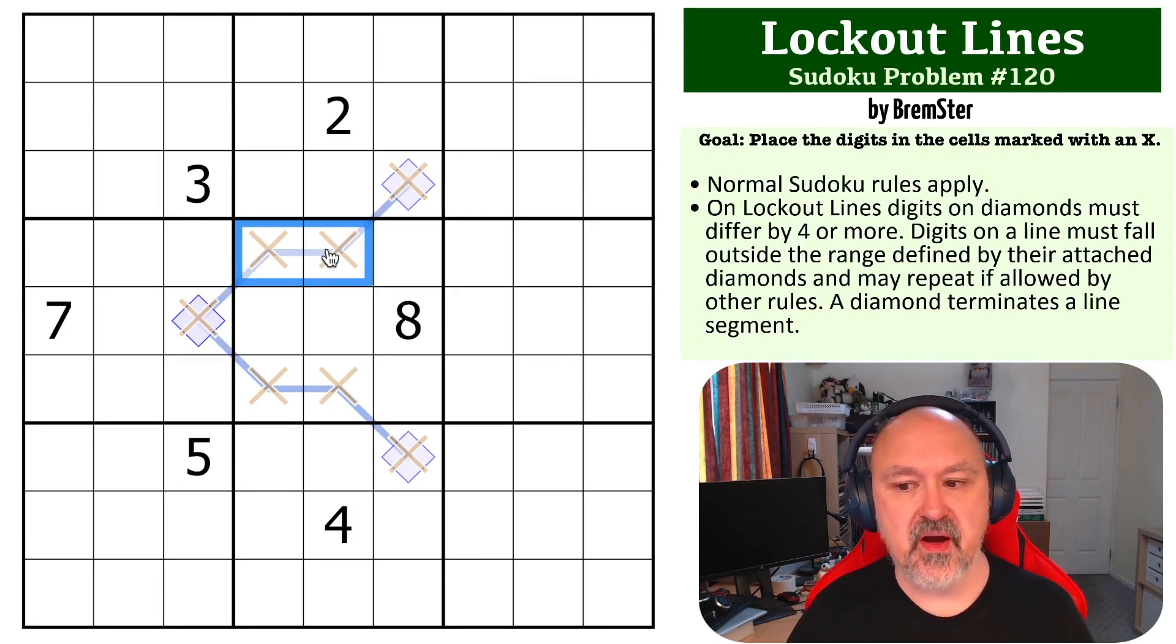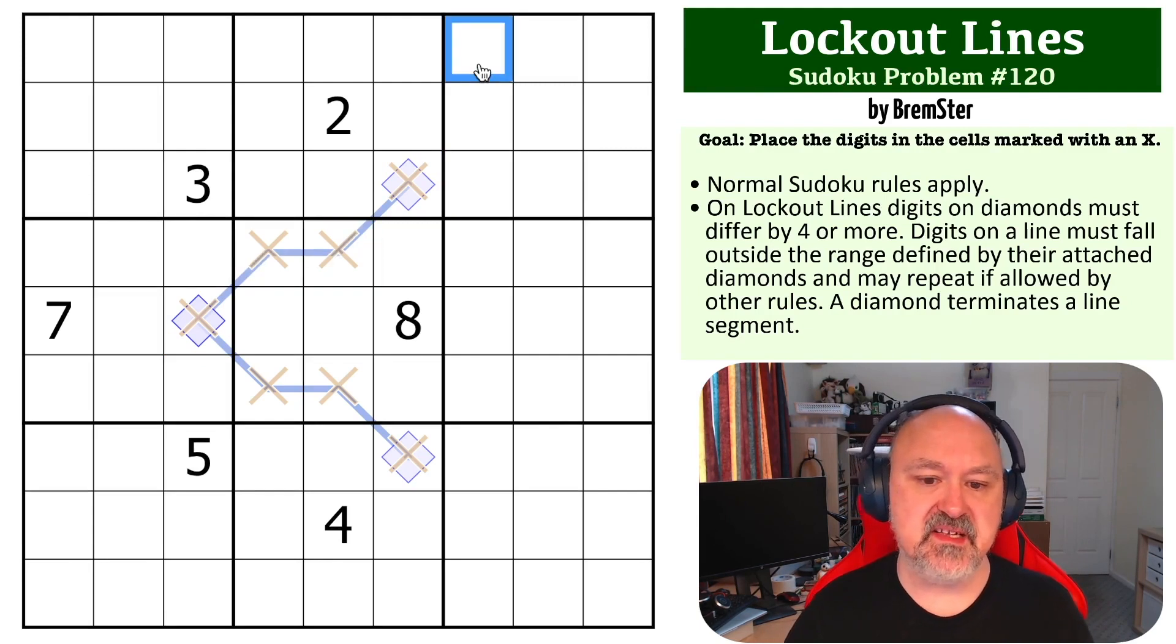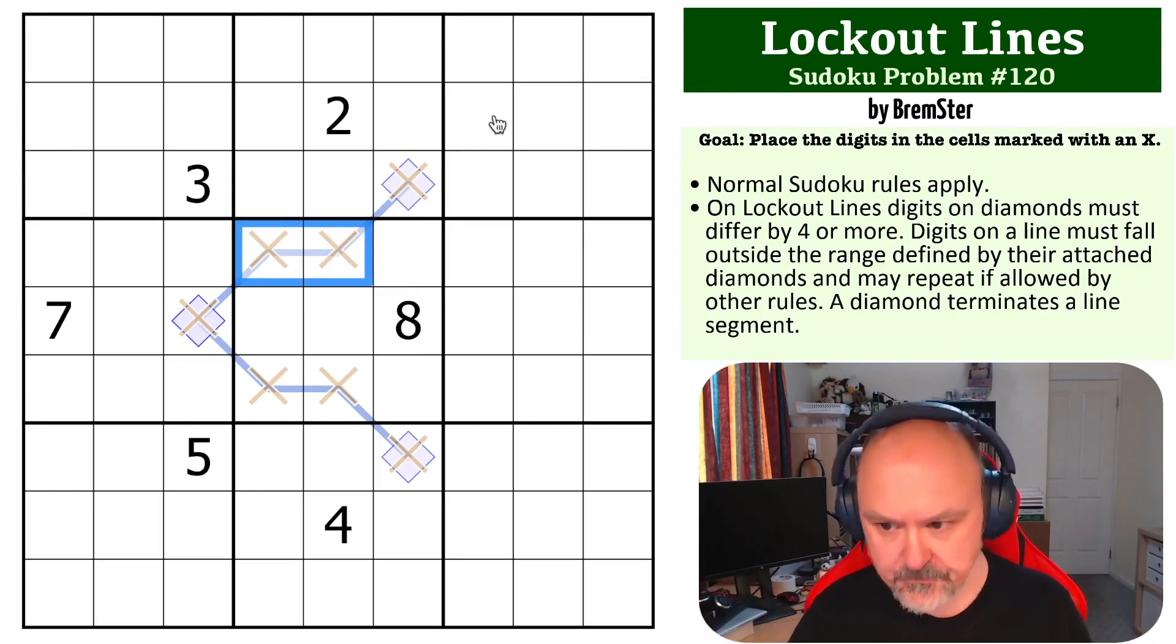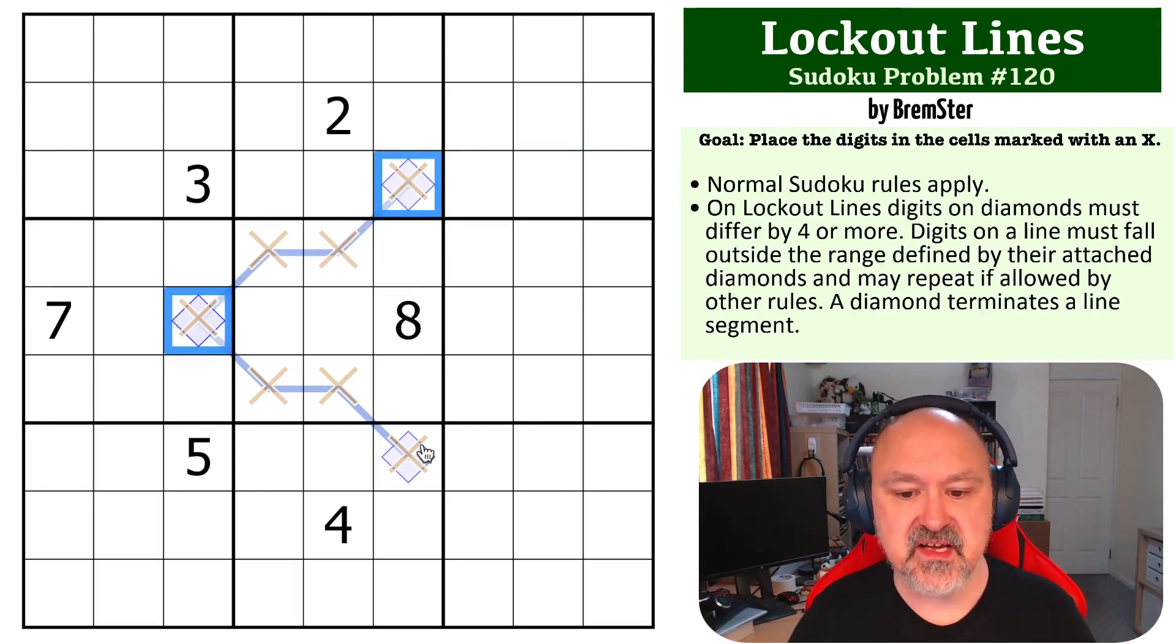And then digits on the lines must fall outside the range of those defined digits. So that basically means that whatever these two digits are, the ones that are on the line cannot be the same or between those digits. And a diamond terminates a line segment.